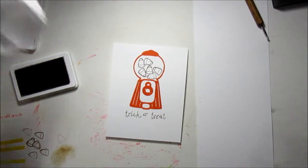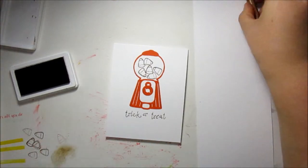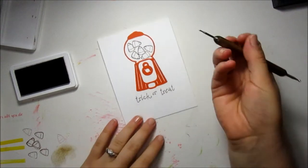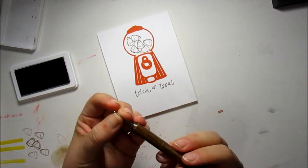That looks great, and now I wanted to create a dotted line underneath the sentiment, but I don't have any stamps that are actually just a dotted line. So I'm going to use a stylus and I have a bigger end and then the small end.